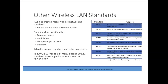IEEE has created many wireless networking standards that handle various types of communication. Each standard specifies the frequency range, modulation, the multiplexing to be used, and the data rate. The table lists the major standards that have been created or proposed and gives a brief description of each. In 2007, IEEE rolled up many of the existing 802.11 standards into a single document known as 802.11-2007. The document describes basic standards and has an appendix for each variant.